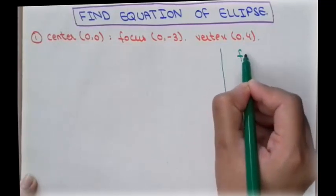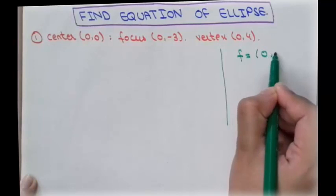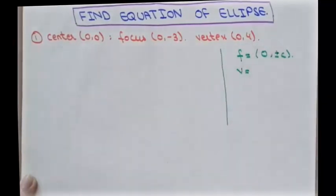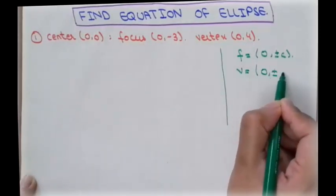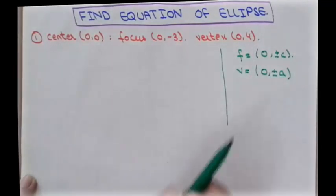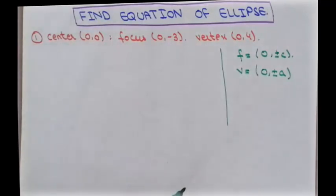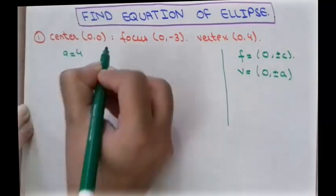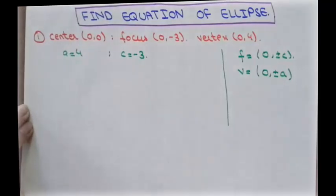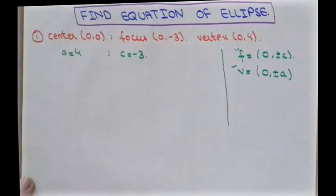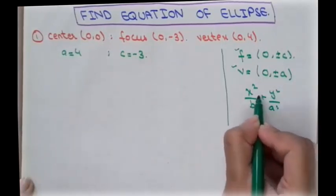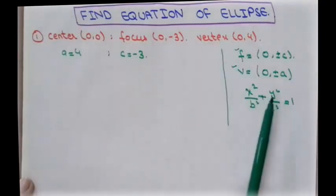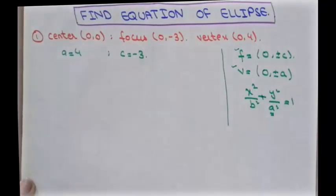In the general equation, the focus is at (0, ±c) and the vertex is at (0, ±a), since the variation is in the y-coordinate. By comparing these equations, we find the value of a equals 4 and the value of c equals −3. Since the variation is along the y-axis, the major axis is the y-axis, so we use the equation x²/b² + y²/a² = 1.